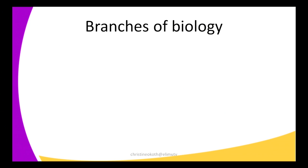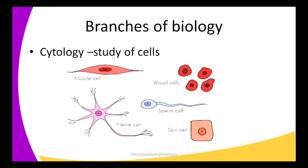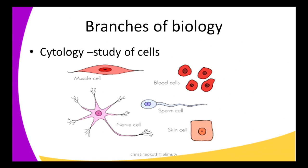The next branch of biology is cytology — the study of cells. As we said earlier, the cell is the basic unit of life. Under this branch we study cells and how they reproduce. Examples of cells include muscle cells, blood cells, sperm cells, skin cells, and nerve cells. All these are studied under the branch called cytology.